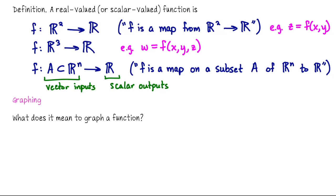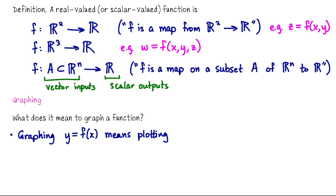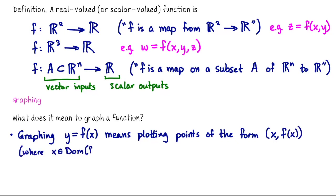We're going to focus a lot on visualizing these functions. What does it mean to graph a function? Starting with the familiar context of functions from R to R: graphing the equation y equals f of x means creating a plot of all points of the form (x, f(x)), where x comes from the domain of f. This is a function of one variable, and the graph is a pair of coordinates, so the graph is pictured in R².